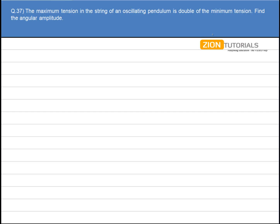The maximum tension in the string of an oscillating pendulum is double of the minimum tension. Find the angular amplitude.